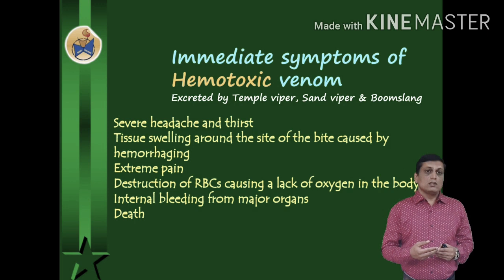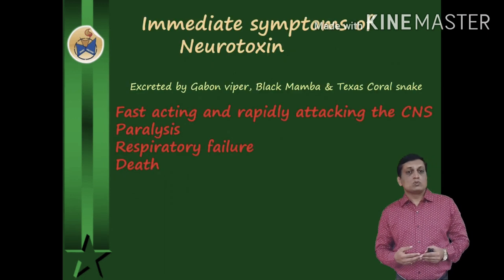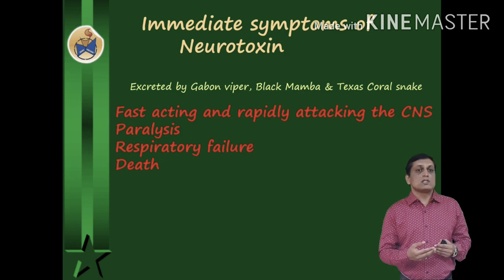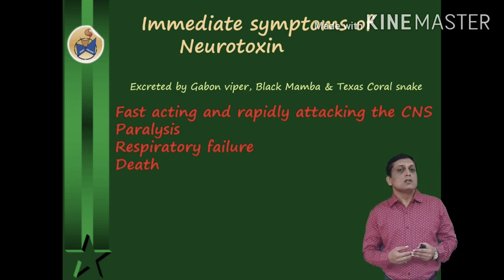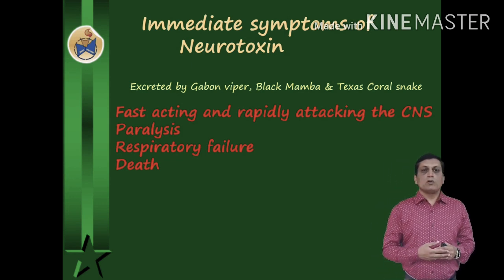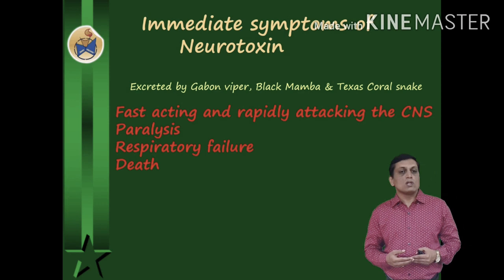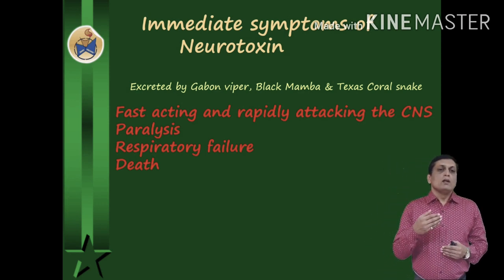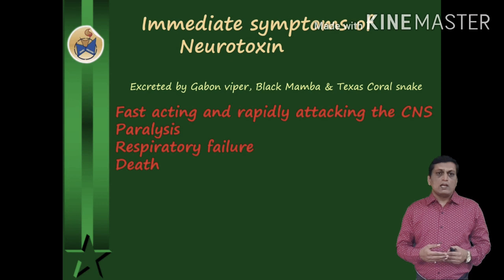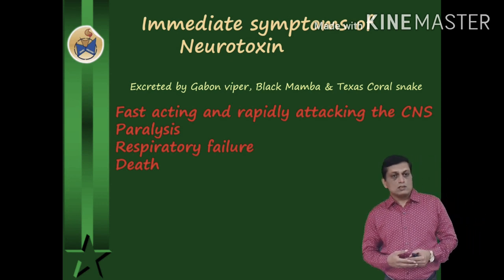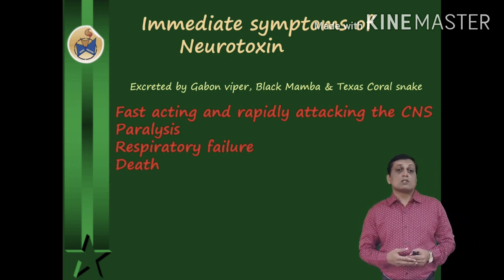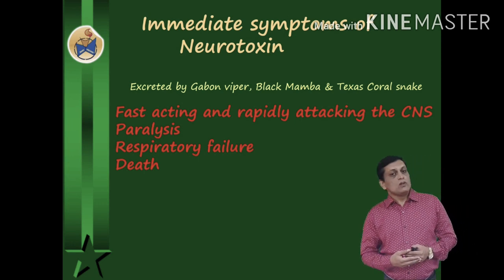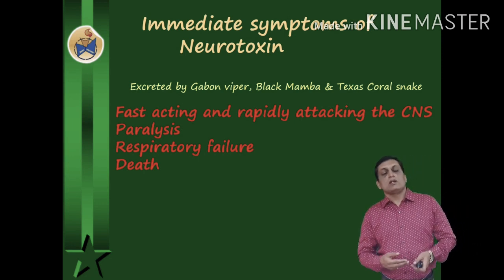Certain immediate symptoms of neurotoxic venom are excreted by certain snakes like the Gaboon viper, black mamba, and coral snakes. It is fast acting and rapidly attacks the CNS, causing paralysis, respiratory failure, and finally death.